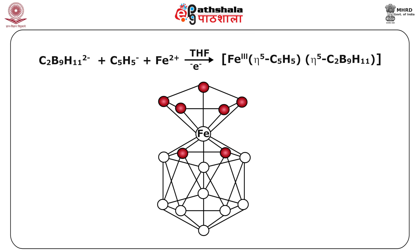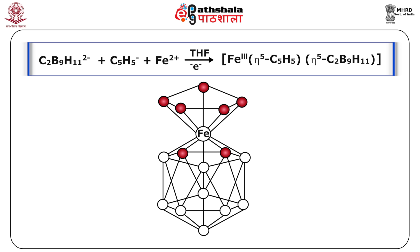If the reaction is carried out in the presence of NaC5H5, the purple mixed sandwich type complex is obtained: C2B9H11(2-) plus C5H5(-) plus Fe(2+) in tetrahydrofuran gives Fe(eta5-C5H5)(eta5-C2B9H11).